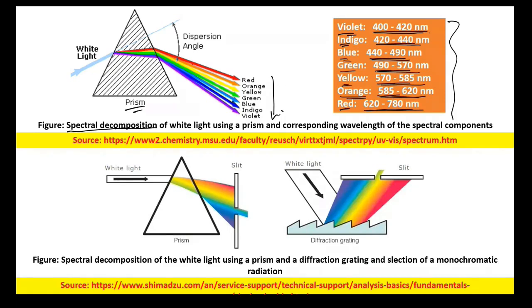Once you have performed spectral decomposition, a slit is used to select a monochromatic light. As you move the slit up and down — if you move it to one position you extract the red light, if you move it down you get the violet light. In this way you can select specific wavelengths.